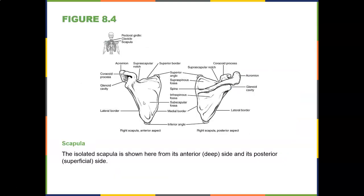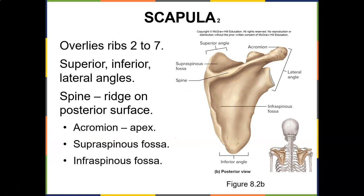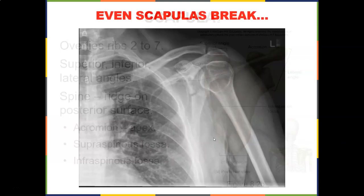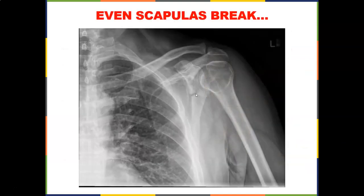Here's a different view — anterior and posterior views of the right scapula. Supraspinatus fossa and infraspinatus fossa are visible. The scapula, your shoulder blade, lies over ribs 2 through 7. Note the superior and inferior angles, the spine ridge on the posterior surface, and the acromion as the apex. Even scapulas break — that's a pretty gnarly fracture from skiing. A common theme: many fractures occur from snowboarding and skiing, so be careful.